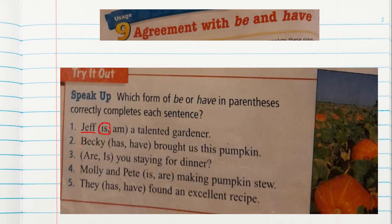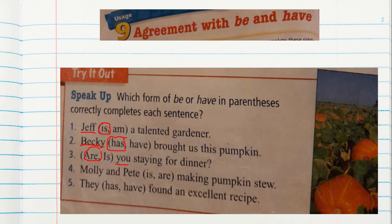Number two, the subject is Becky. Underline the subject. We know that Becky is singular. So which form of the verb have do we use for Becky? Has. Becky has brought us this pumpkin. Now here is a question — we have in parentheses are or is, but the subject is you. You staying for dinner. We know that you is plural, so you will use the plural form of the verb: are. Are you staying for dinner?